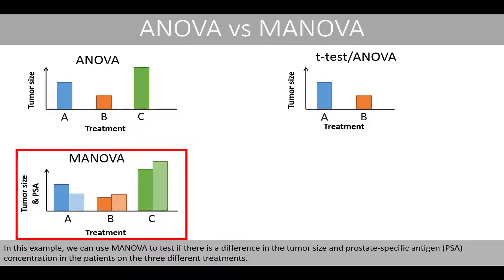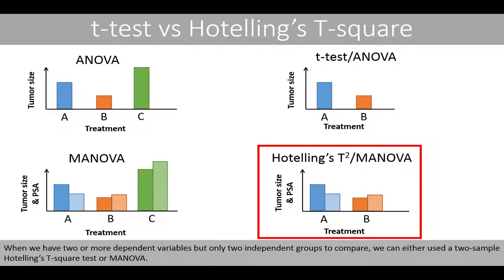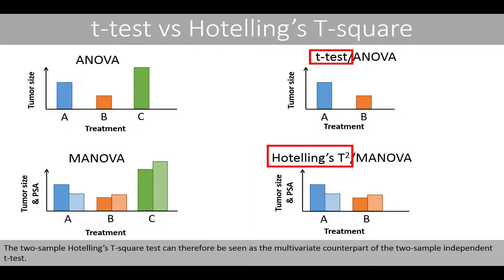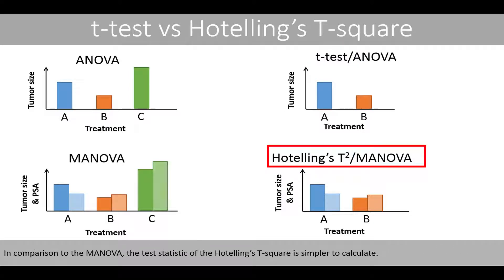In this example, we can use MANOVA to test if there is a difference in the tumor size and prostate-specific antigen concentration in the patients on the three different treatments. When we have two or more dependent variables but only two independent groups to compare, we can either use a two-sample Hotelling's t-square test or MANOVA. The two-sample Hotelling's t-square test can therefore be seen as the multivariate counterpart of the two-sample independent t-test. Compared to MANOVA, the test statistic of the Hotelling's t-square is simpler to calculate.